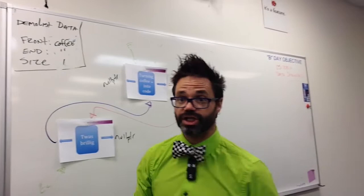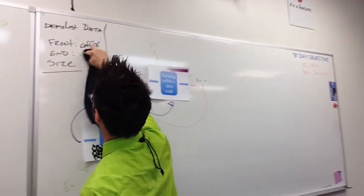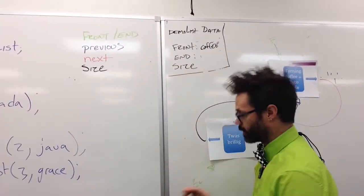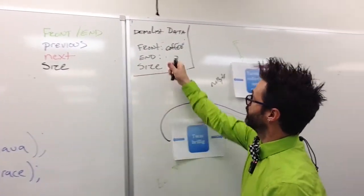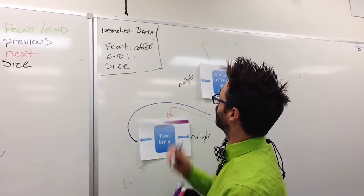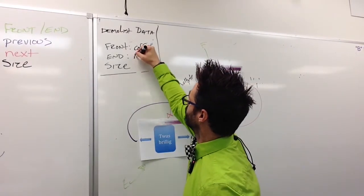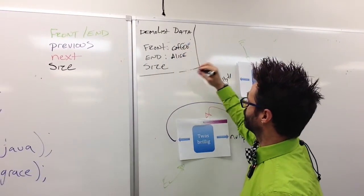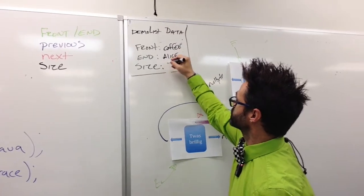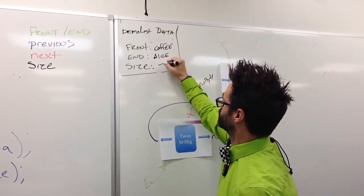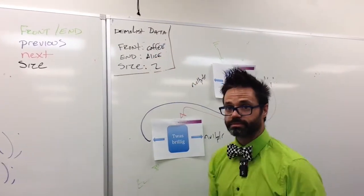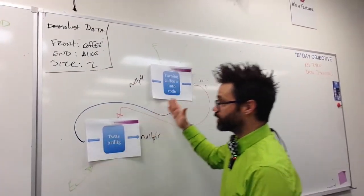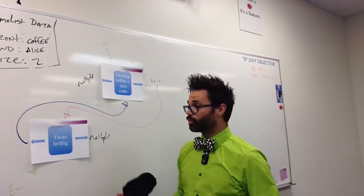So we make those appropriate changes on our reference sheet. End is no longer pointing to Coffee — end points to the Alice string pointer. And the size goes up by one to become two. There is our list after two add statements.